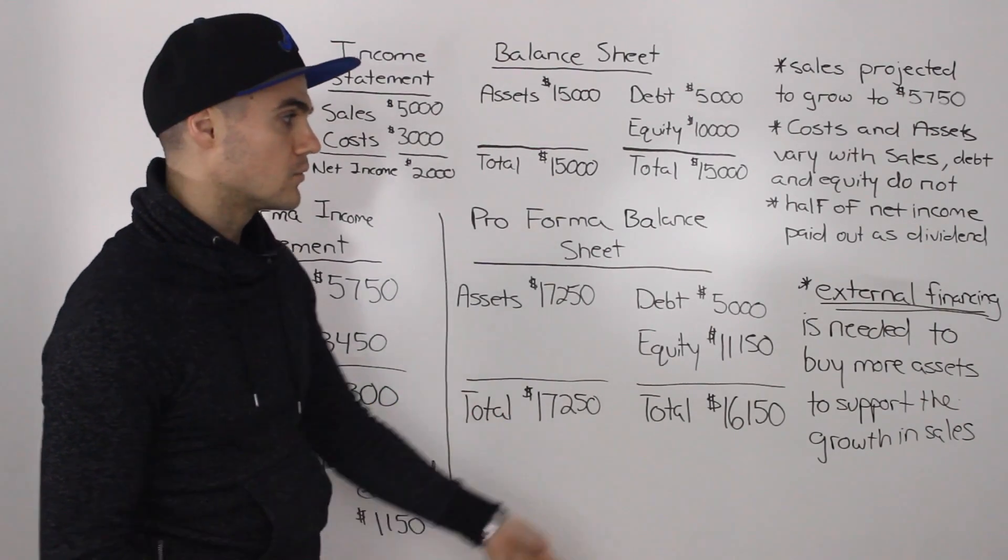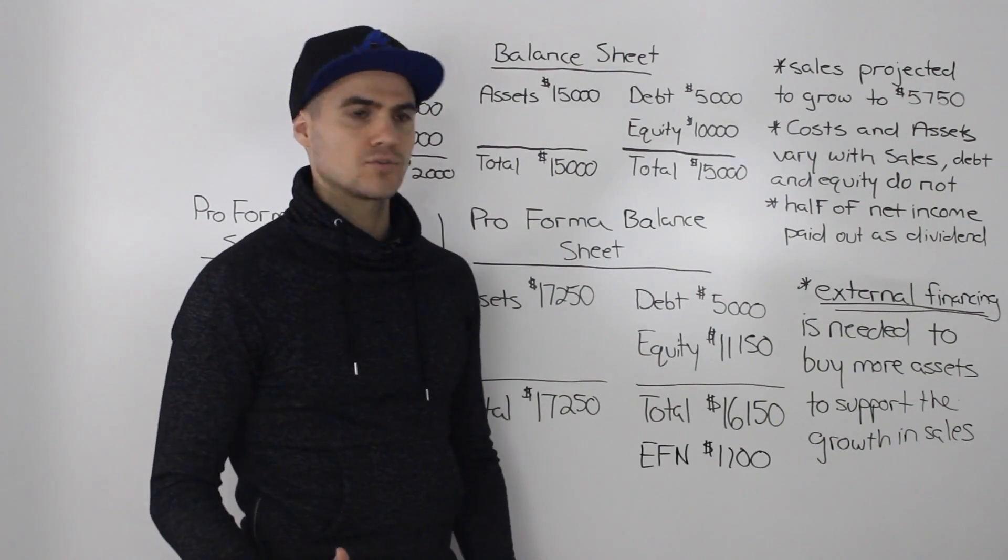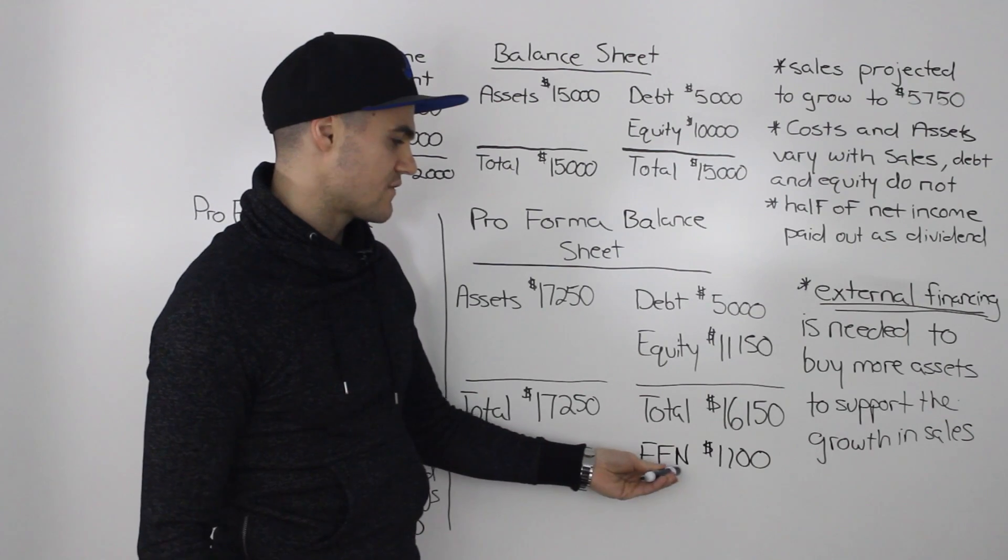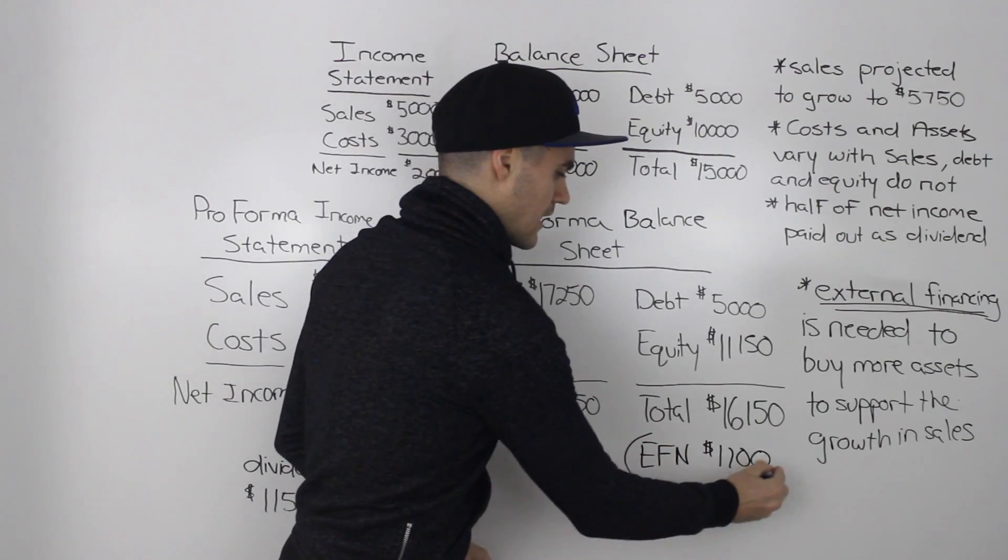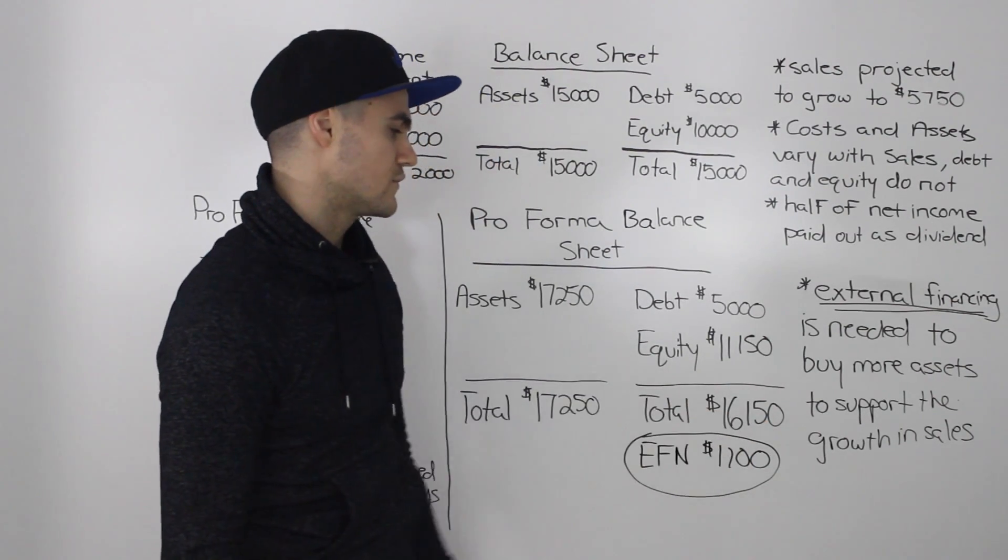Well, where are we going to get that money? We need that external financing. And the actual amount of external financing needed, which I represented as EFN here, is $1,100. And the way I got that figure was I just subtracted $16,150 from $17,250.